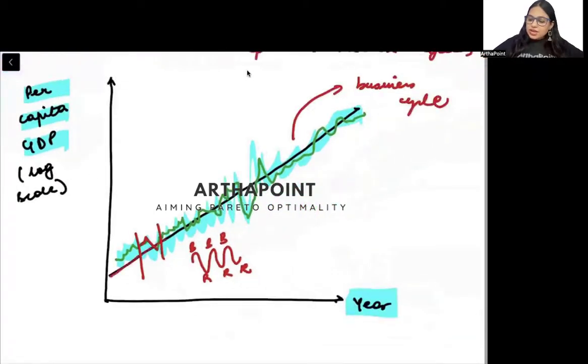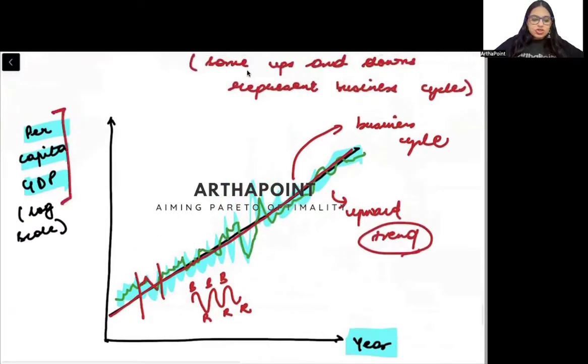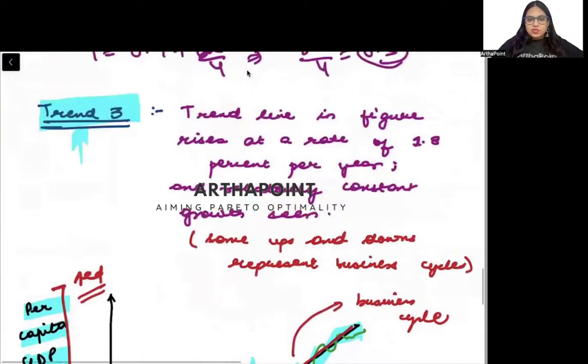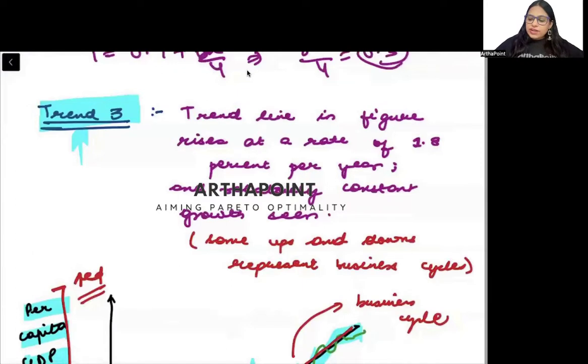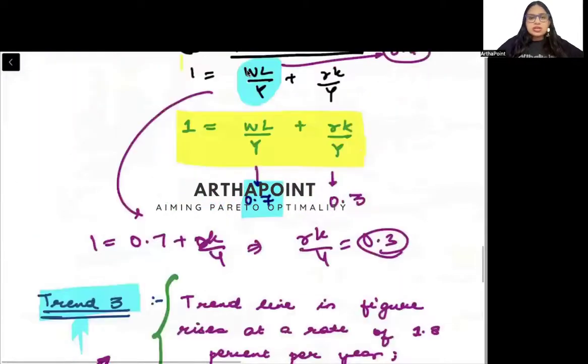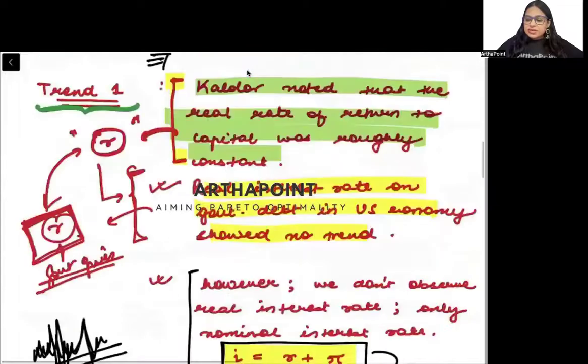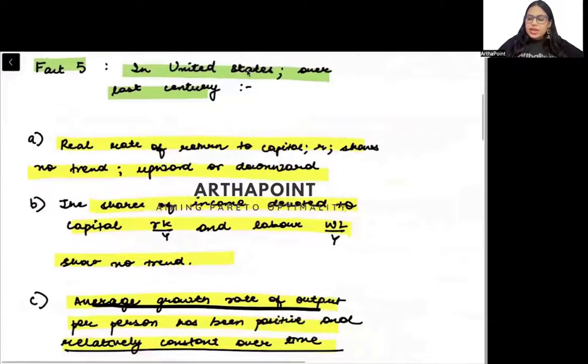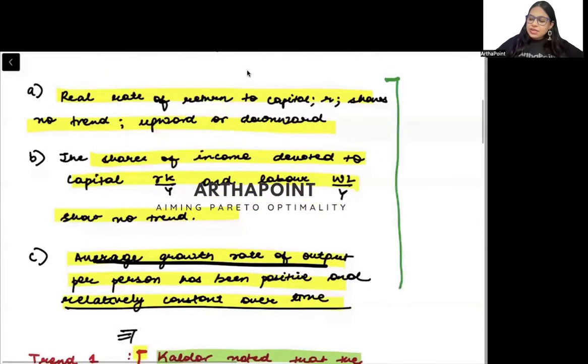But if I try to pass a line through it I see an upward trend. Trend is a long run phenomena. I see an upward trend which means that the per capita GDP has increased over time. Although it has been increasing at a constant rate. That is the third thing that was seen. These are the three stylized facts about US and it can be extended to many developed countries also.